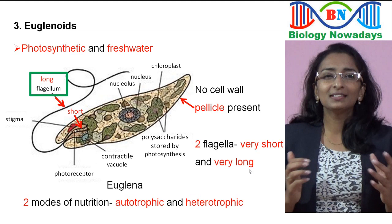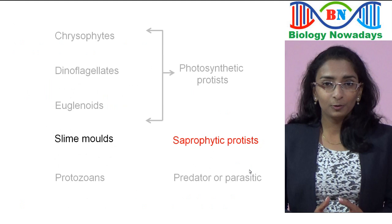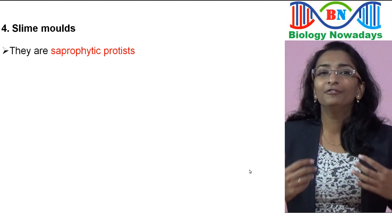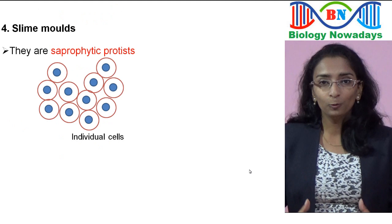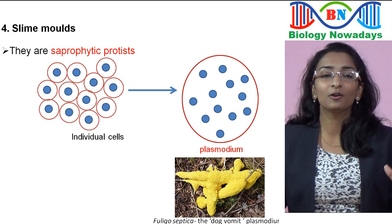Now let's move on to the fourth group — slime molds. They are the saprophytic protists, which means they feed on dead organisms. Under favourable conditions — for example, when there is a lot of food available — they aggregate together and form a multinucleate vegetative body called plasmodium. This will grow and spread over several feet and finally form sporangia, bearing spores.